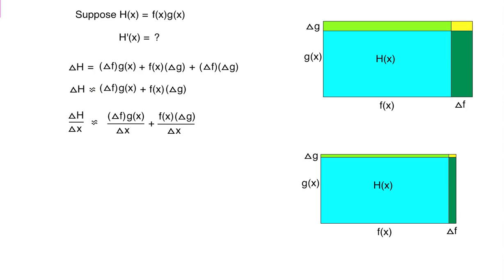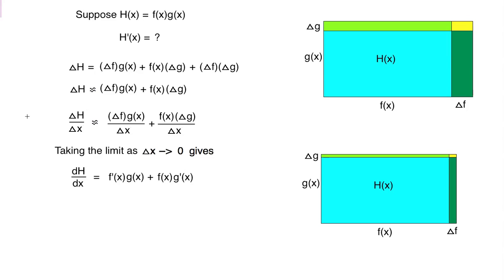These things also become derivatives, like this. Take the limit as delta x approaches zero, we get the derivative of h with respect to x. That's what we're looking for, h prime of x, is the instantaneous rate of change of f compared to x, the derivative of f times g, plus f times the derivative of g.